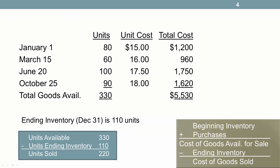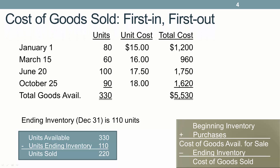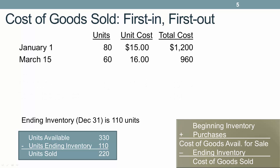Under first in first out, you are assuming that the first items you purchased are the first ones to be sold. So we start with our January 1, then our March 15, then our June 20 purchase. We can't use all of the June 20 purchase, so we only include 80 units to reach our total of 220 units sold. Taking 80 units times $17.50 per unit gives a cost of $1,400, and our total cost of goods sold under FIFO is $3,560.